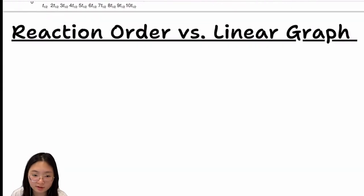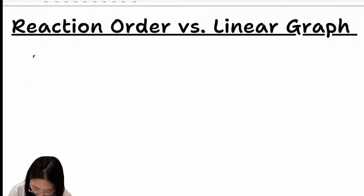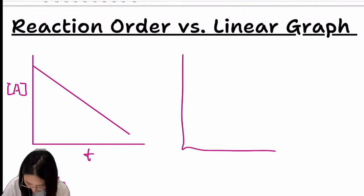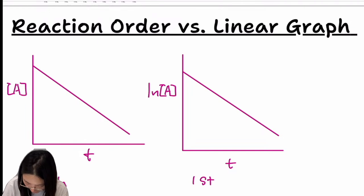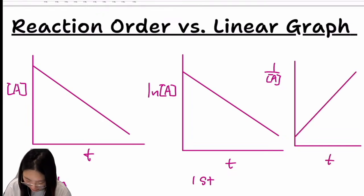To summarize reaction order versus linear graph: if concentration vs. time is linear, it's zero-order. If ln[A] vs. time is linear, it's first-order. If 1/[A] vs. time is linear and shows a positive linear relationship, it's second-order.